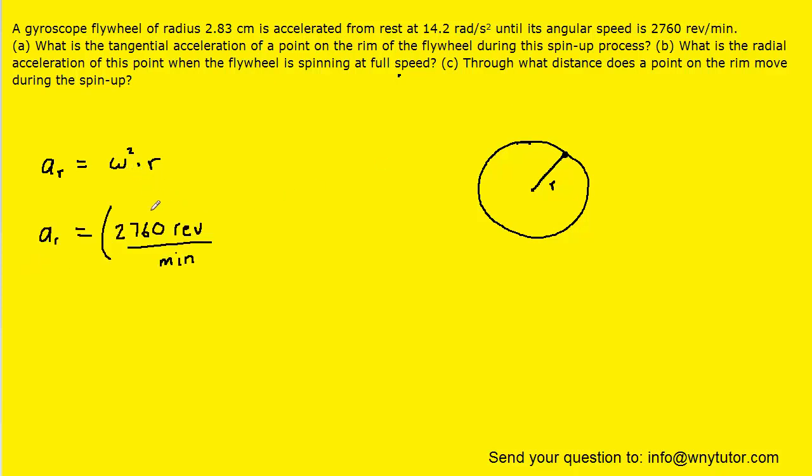And we can begin by writing it as revolutions per minute. And then we know that one revolution is equivalent to two pi radians. So that's going to cancel out the revolutions. And we also know that one minute is equivalent to 60 seconds. So that will cancel out the minutes and leave us with the standard unit of radians per second for that angular speed.